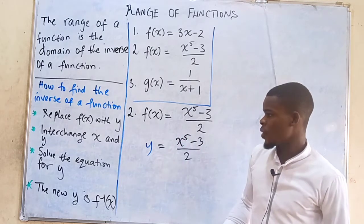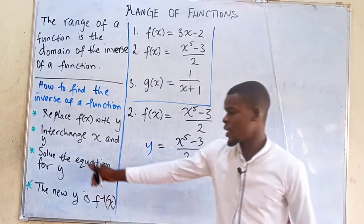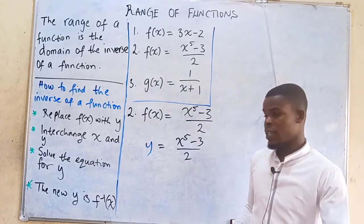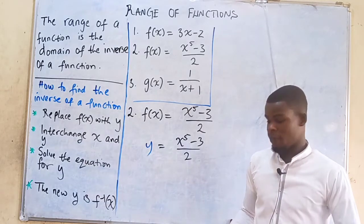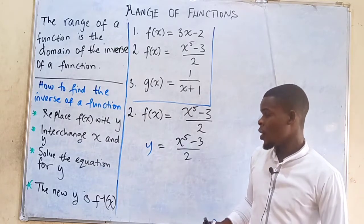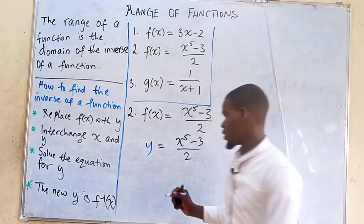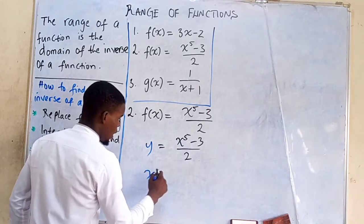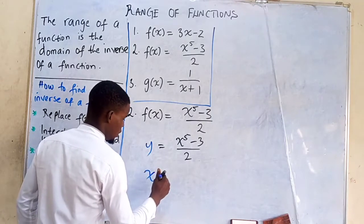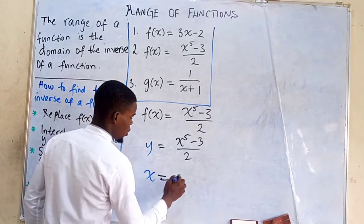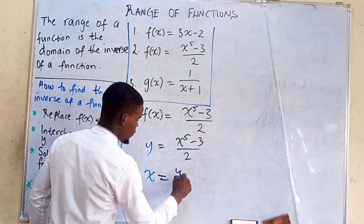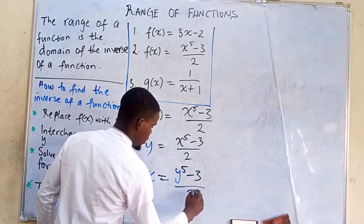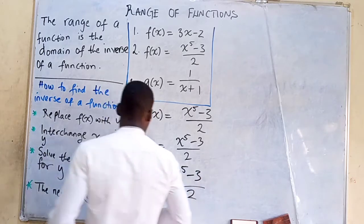The next thing we have to do is to interchange x and y. So in place of x, I'm going to put y, and in place of y, we'll just write x. That gives us x = (y⁵ - 3) / 2.